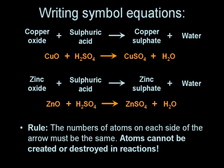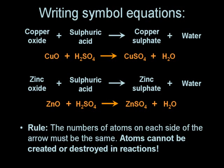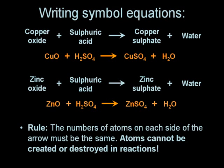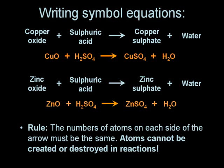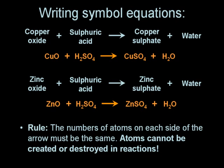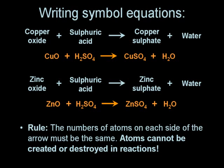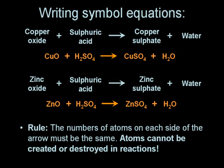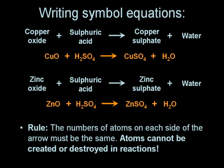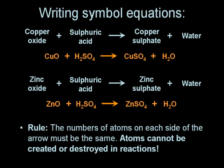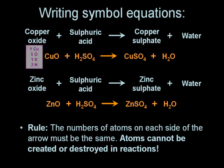One important rule is that the numbers of atoms on each side of the arrow must be the same — atoms cannot be created or destroyed in chemical reactions. So let's take a look at the first example. We have to count the number of copper, oxygen, hydrogen and sulphur atoms on the left hand side.